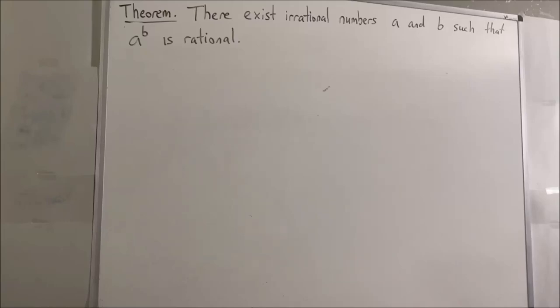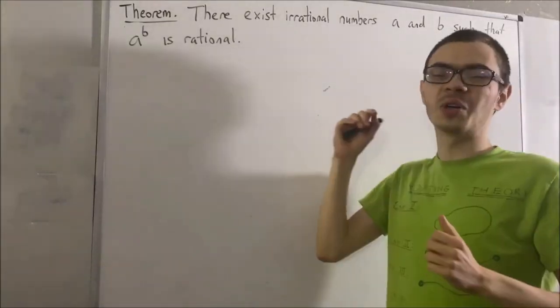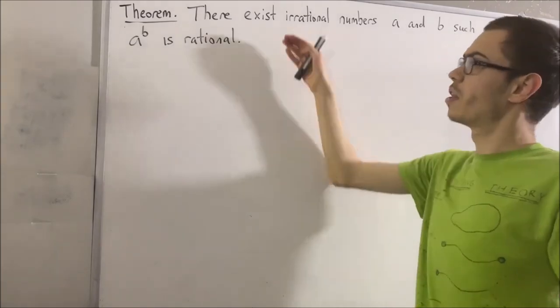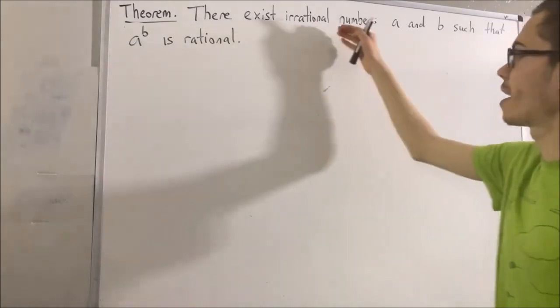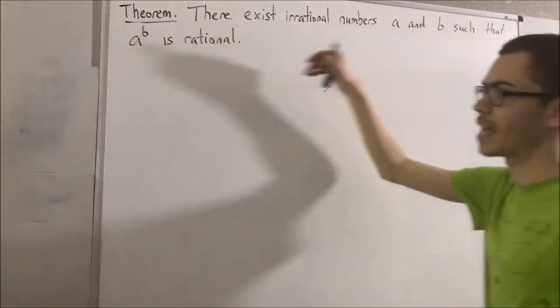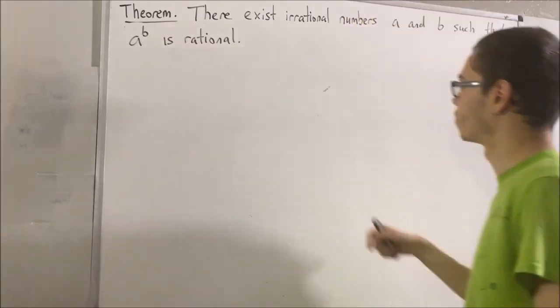Hello. In this video, we're going to prove the following theorem: there exist irrational numbers a and b such that a to the power of b is rational.